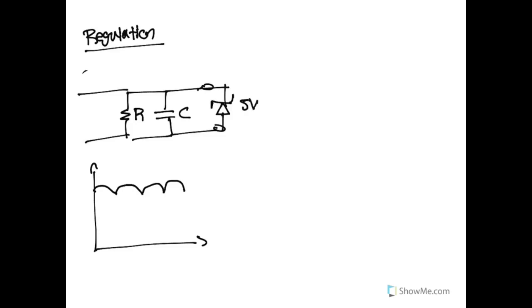So if this is a 5-volt Zener diode, it will ensure that 5 volts is always across the diode, and if it needs to, it will sync any extra current through this circuit.